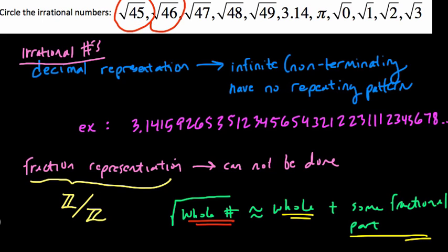Same thing is true with 46. Radical 46, the answer is between 6 and 7, right? Really close to 7, but still some whole number and a fractional part. The square root of 47 is also irrational for the same reason, and so is 48.